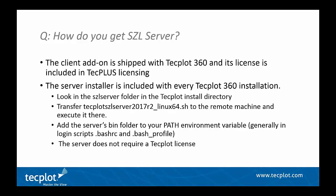How do you get SISL server? The Linux installer for SISL server is shipped and installed with every version of TechPlot 360. It's stored in the SISL server folder just beneath the TechPlot 360 install directory. You'll need to transfer it to your remote machine using SCP and then run it on the remote machine. You then have to add SISL server's bin folder to your PATH environment variable by modifying bashrc and bash_profile. Having done that, you're pretty much done, because there's no licensing required on the remote machine.